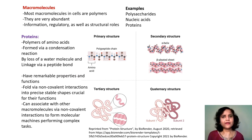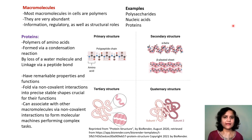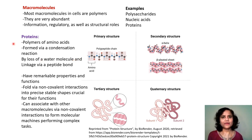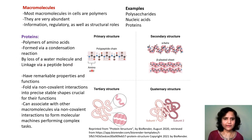Most of the macromolecules in cells are polymers. Their roles range from informational and regulatory to structural. Examples given earlier were polysaccharides, nucleic acids, and proteins. Proteins are polymers of amino acids formed via condensation reaction by loss of a water molecule and linkage via a peptide bond, which is a C-O-N-H bond that is somewhat partially planar.